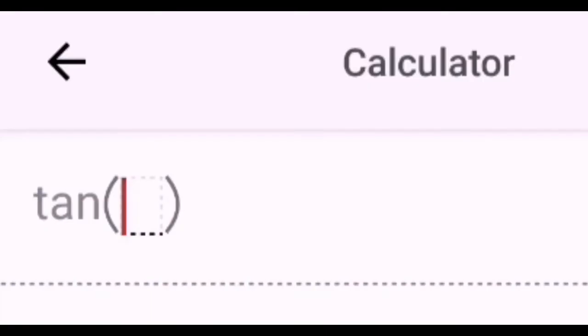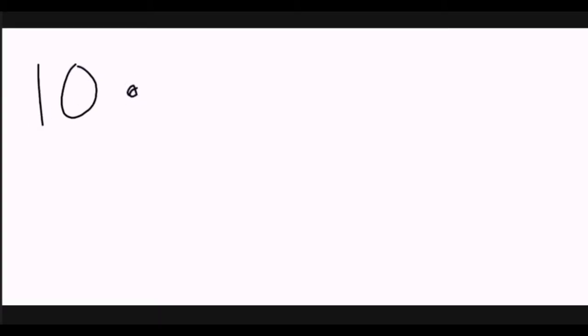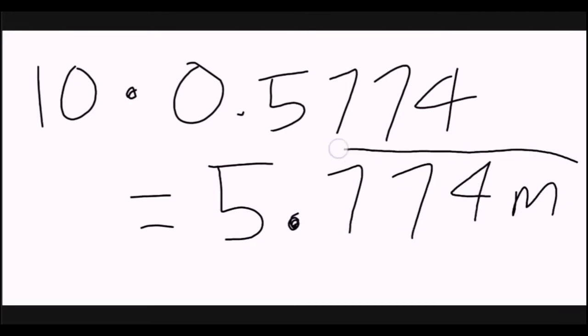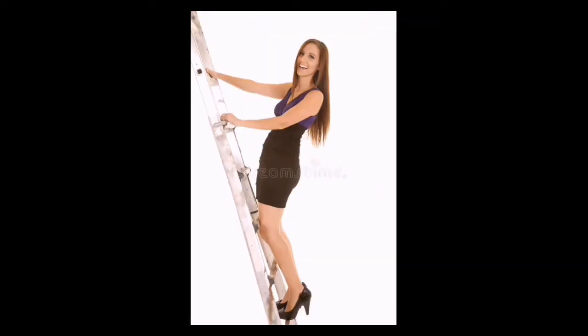Calculator. We're going to type in tan 30 degrees. It will give us a decimal, so it will be 10 times 0.5774. It's already rounded off. Our answer will be 5.774 meters.